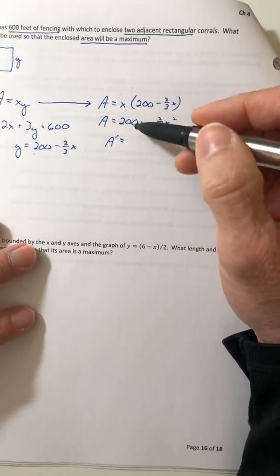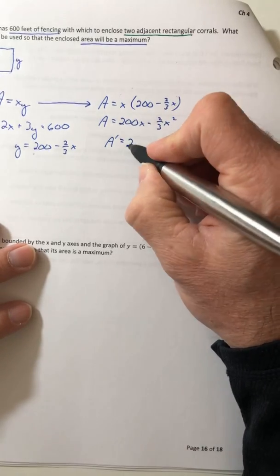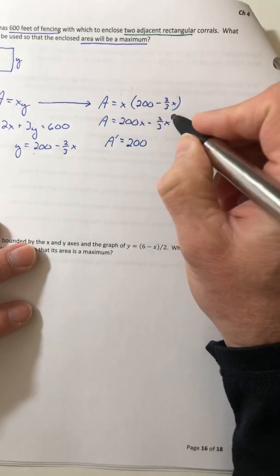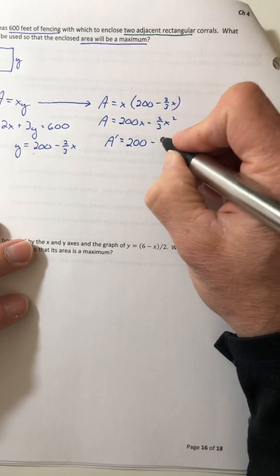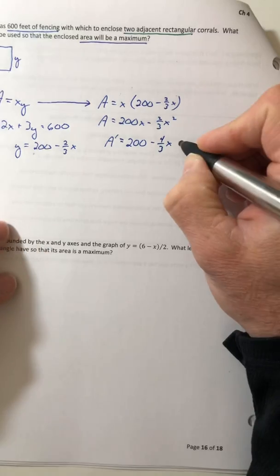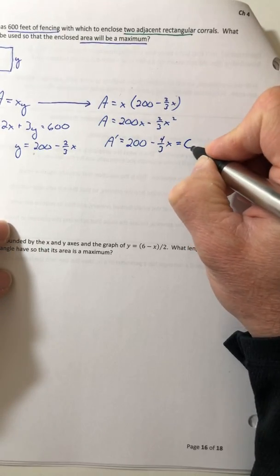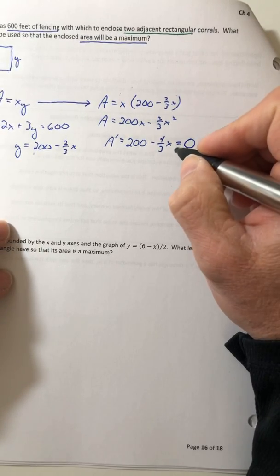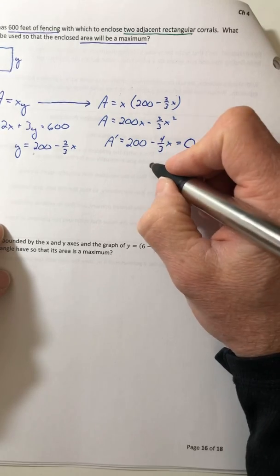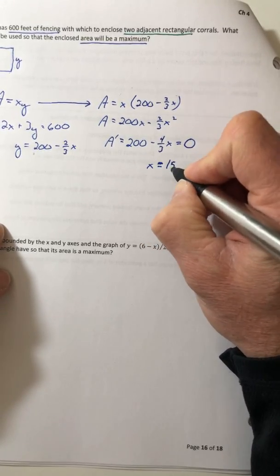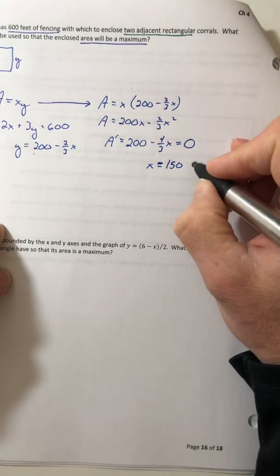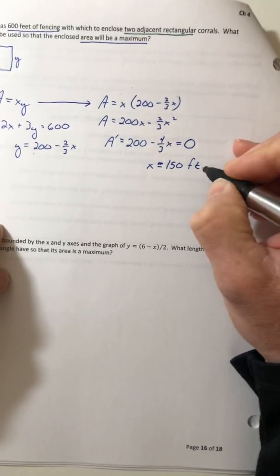So the derivative of this, or if you used the product rule, is going to eventually be 200 minus four thirds X. And we're going to set that equal to zero. Solve for X and X is going to be 150 feet.